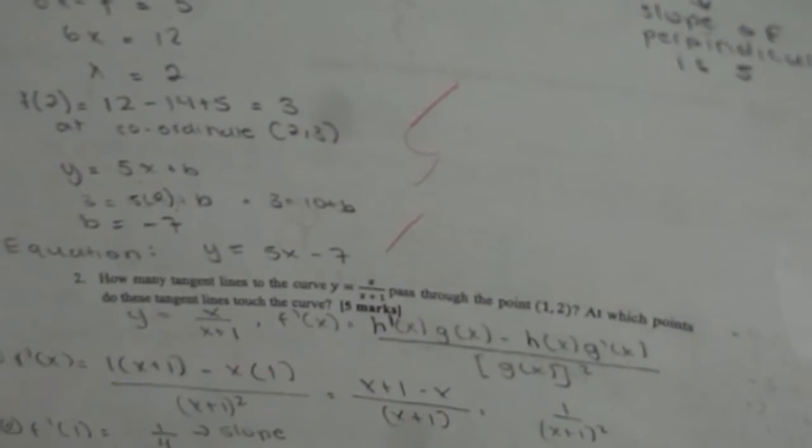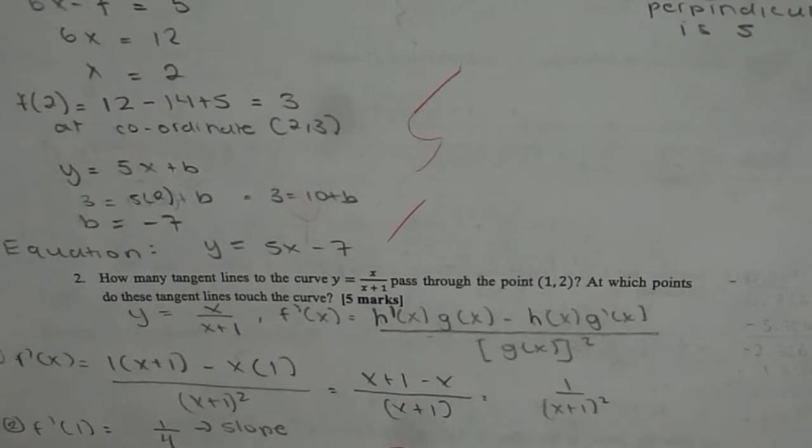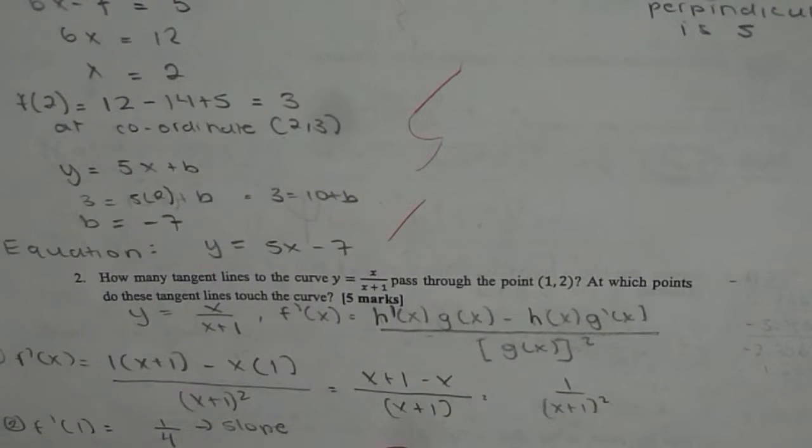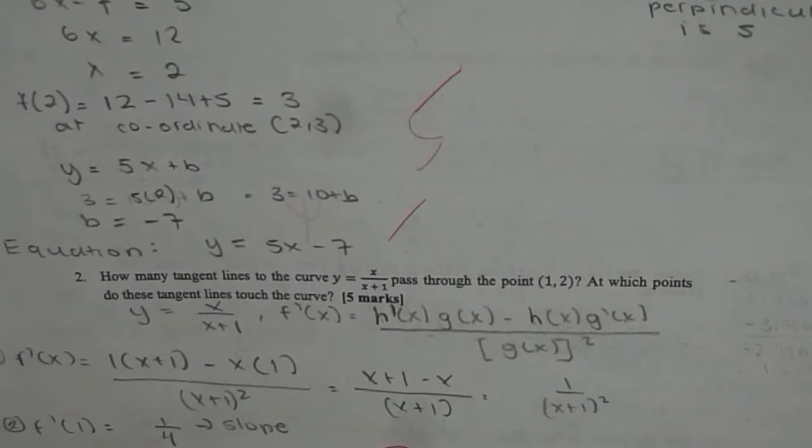And second question on this page is how many tangent lines to the curve y equals to x divided by x plus 1 pass through the point 1, 2. At which point do these tangents touch the curve?